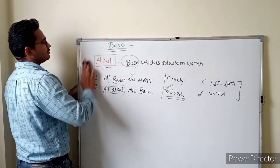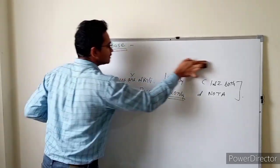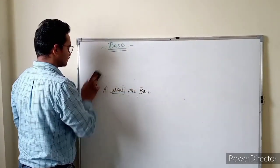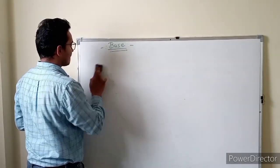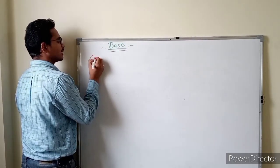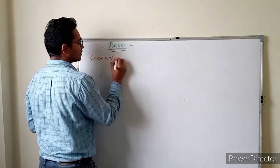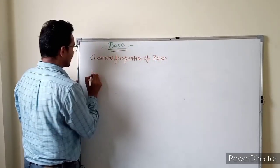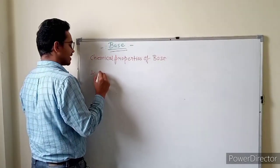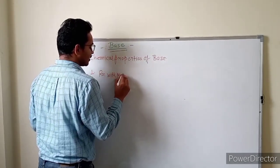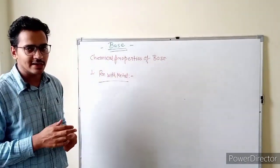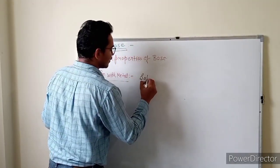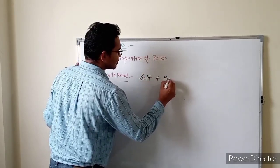After this we move to the chemical properties of bases. The first property is reaction with metal. Just as acid produced salt and released hydrogen gas, base will do the same — it forms salt and releases hydrogen gas. Let's take zinc metal reacting with NaOH as our example.